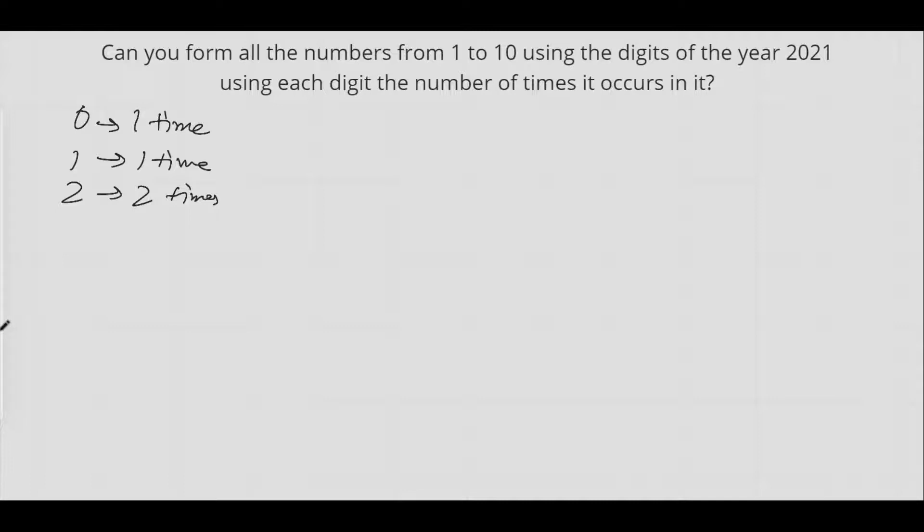The first few numbers will be very easy. We can form one using 2×0×2+1. This will be 0+1 which equals one. Similarly, we can form two.